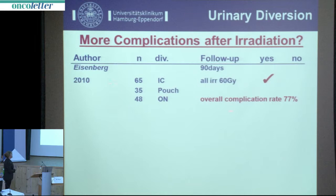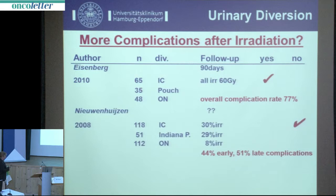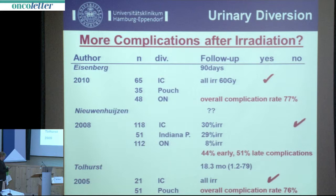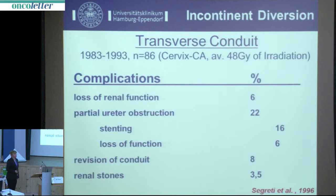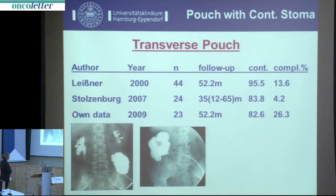In one 2010 study, the overall complication rate using standard techniques was 77 percent, compared to a normal rate of around 30 percent. In a 2008 study, the majority of patients were irradiated, with 44 early and 51 late complications, and an overall complication rate of 76 percent. Experience from gynecology in heavily irradiated patients shows that the transverse conduit has acceptable complication rates even in large series with high-dose irradiation. Our own data on the transverse pouch also shows acceptable complication rates for the irradiated group.